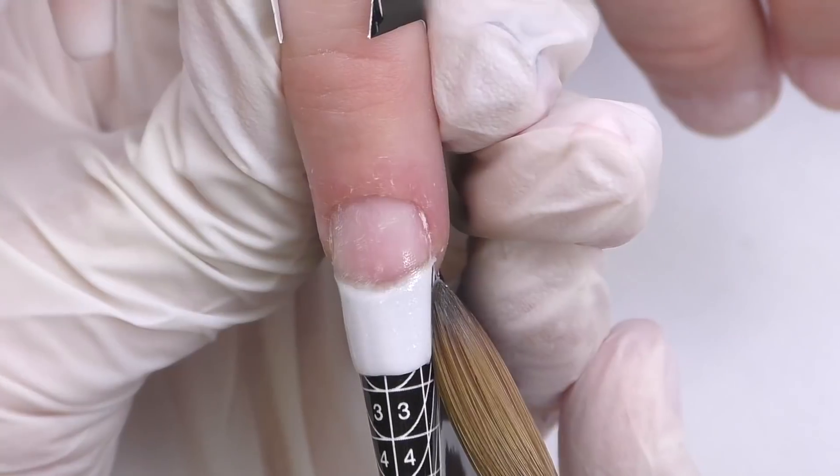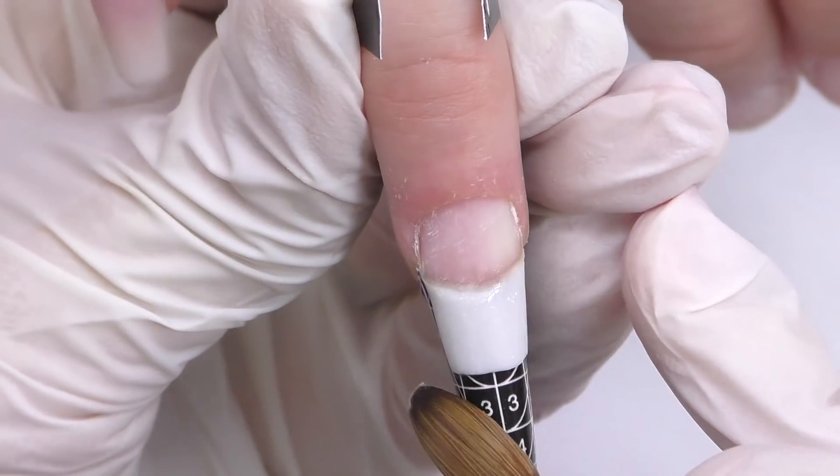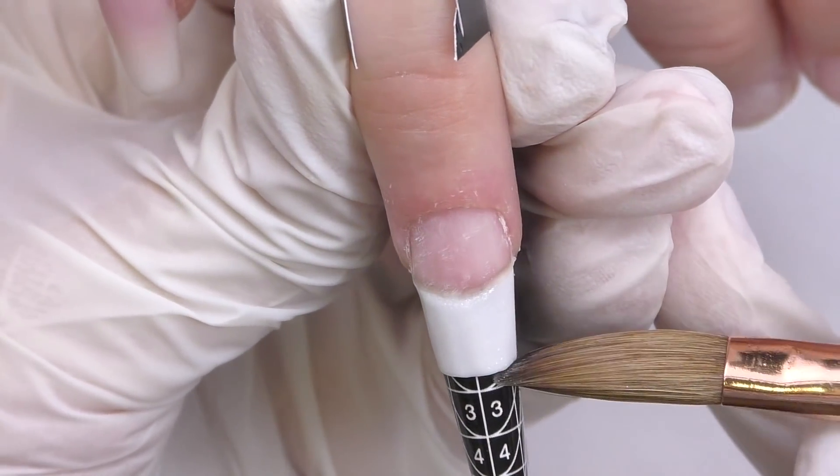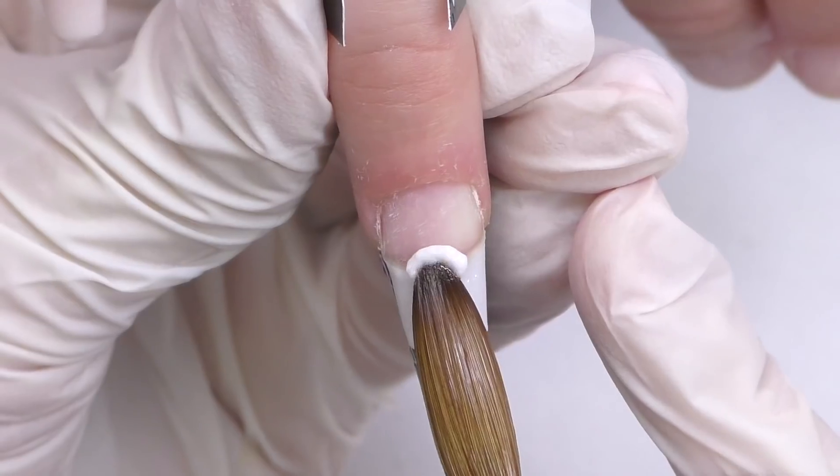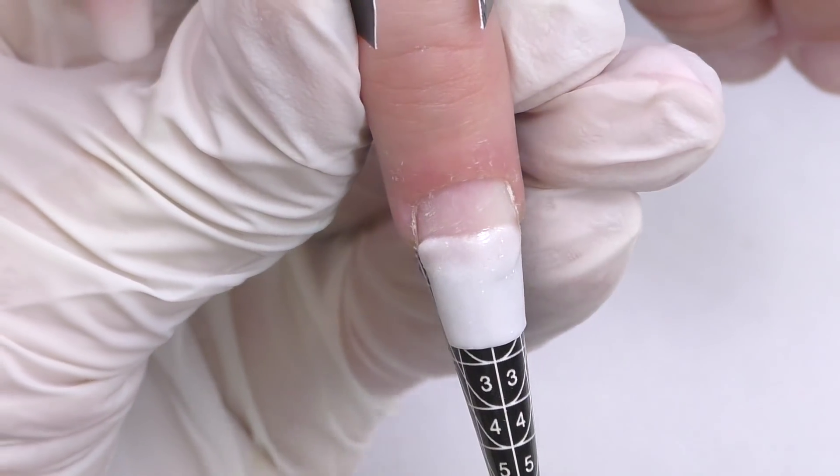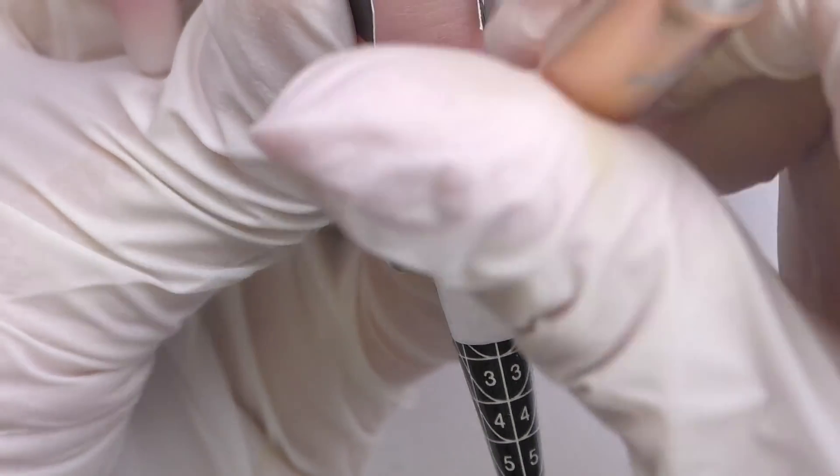So I always start a baby boomer with this base. So I create the free edge first, basically where like sculpting a tip. And once I am happy with the shape, with the surface, once it's all good, then I add another bead and blend it towards the cuticle. So we can create a perfect blend.